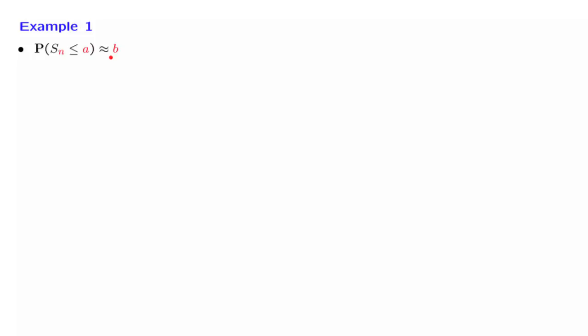And you can imagine problems where you are given two of these parameters and you're asked to find the third. And this gives us the different variations of the questions that we might be able to answer. So we will go through examples of each one of these variations.